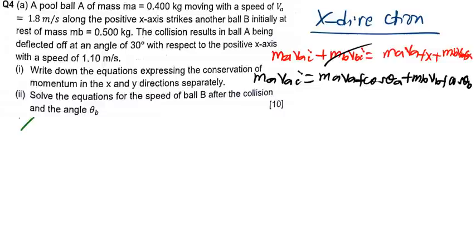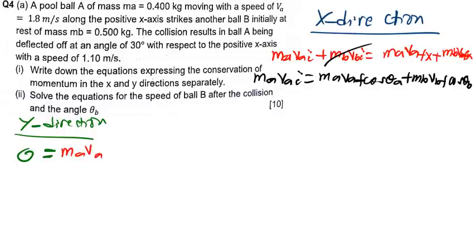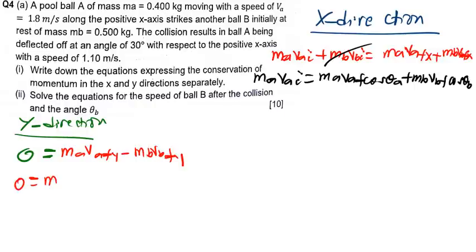For the y-direction: initially, the momentum in the y-direction is zero since the ball was not moving in the y-direction. After the collision, we have MA·VA_final·sin(theta_A) minus MB·VB_final·sin(theta_B). So 0 = MA·VA_final·sin(theta_A) − MB·VB_final·sin(theta_B). This is our equation for the y-axis.